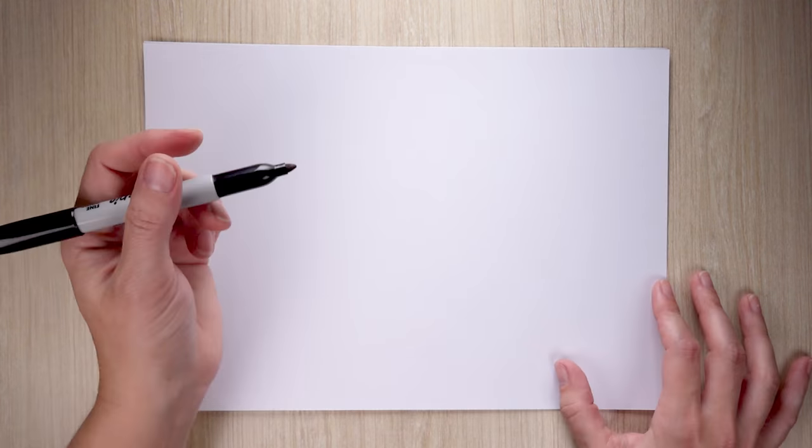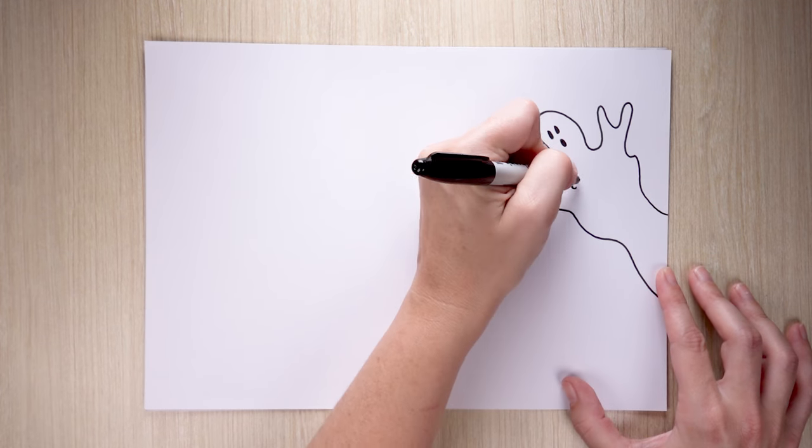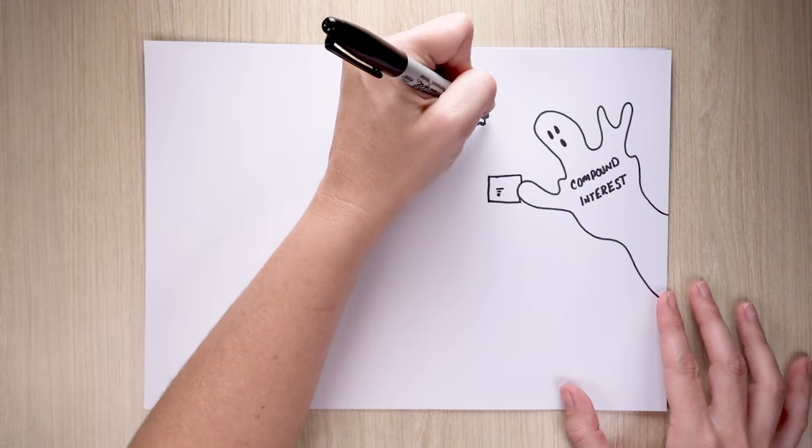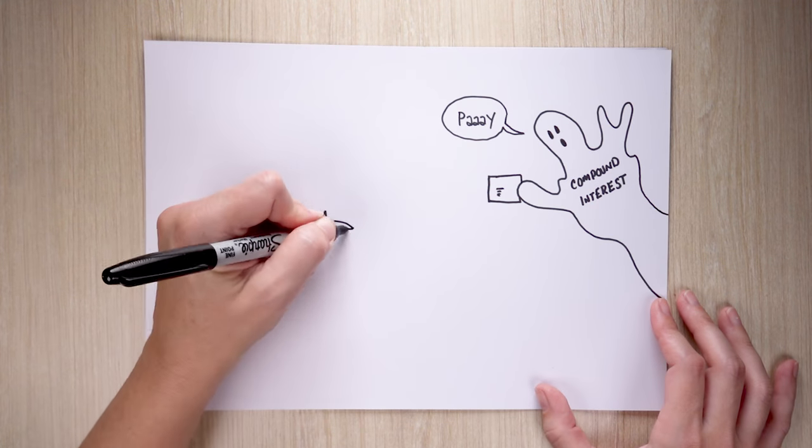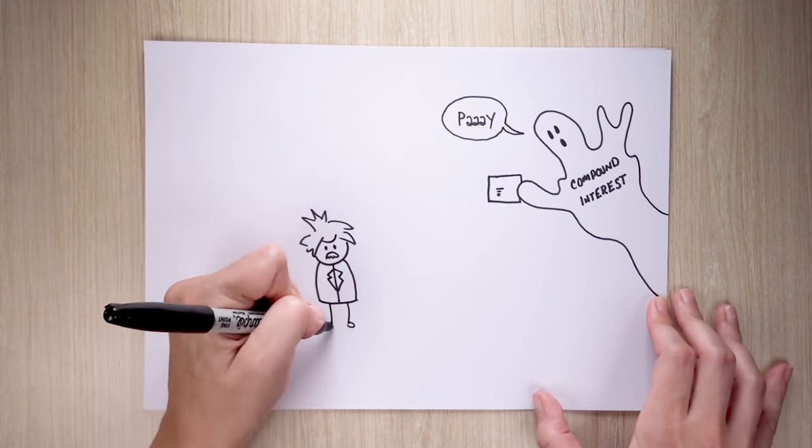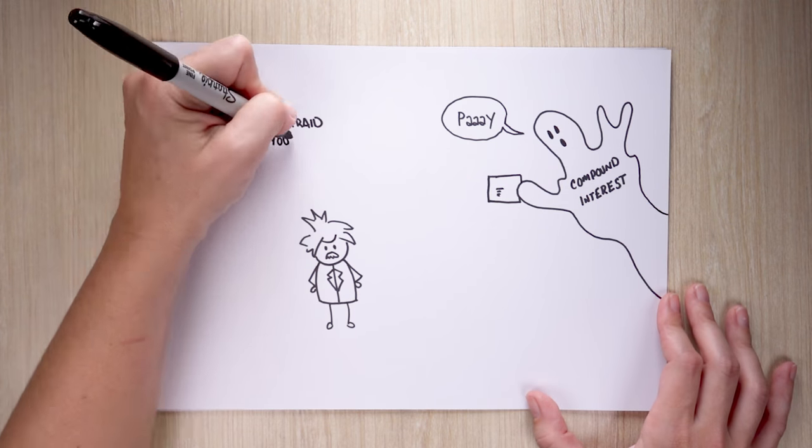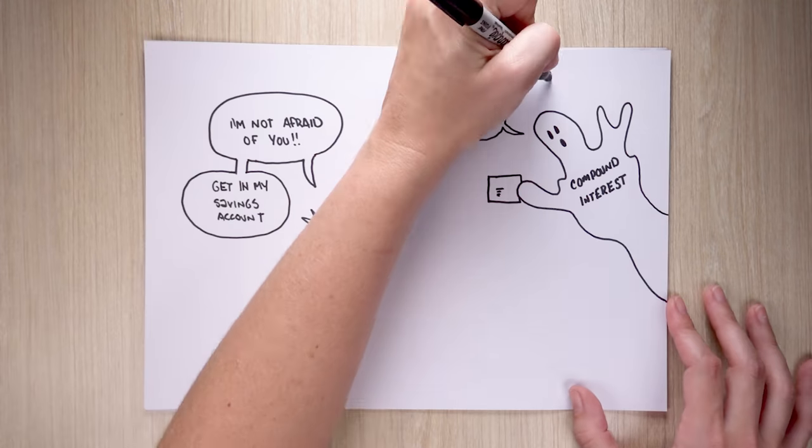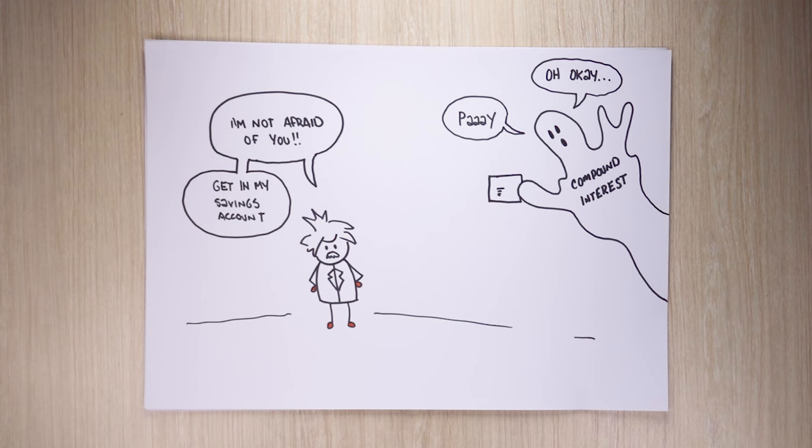It's also worth remembering compound interest can work against you when you are the one paying it, such as with credit cards. So keep this in mind when considering your options. When it comes to compound interest, we tend to agree with Mr. Einstein, who also supposedly said that those who understand it earn it and those who don't pay it. Which camp would you prefer to be in?